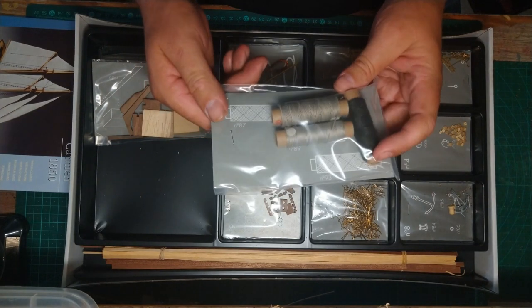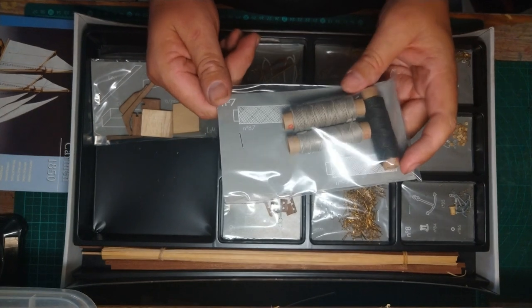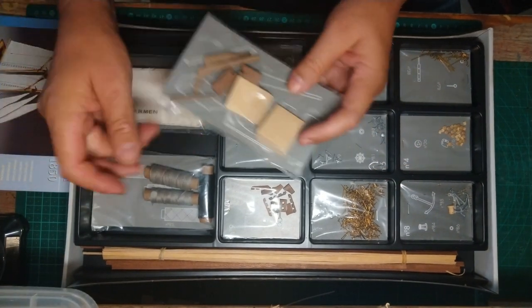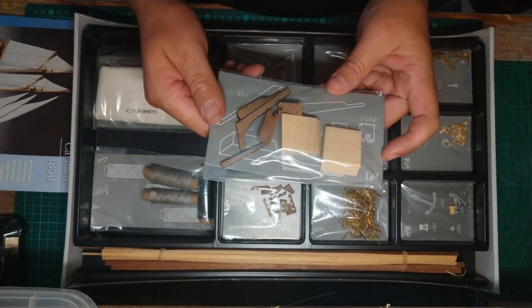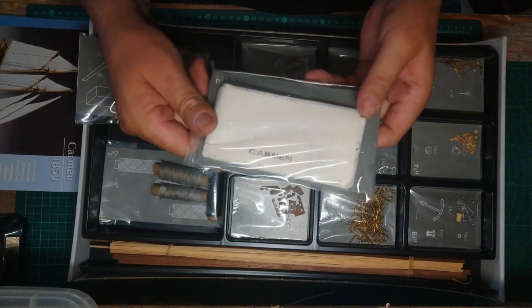In package number 11, we've got a copper rod and some copper cable, which looks quite nice. Then we've got all the thread that they want us maybe to use for the sails as well, to keep them in place.